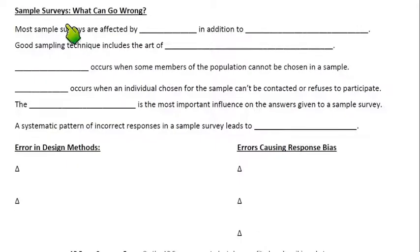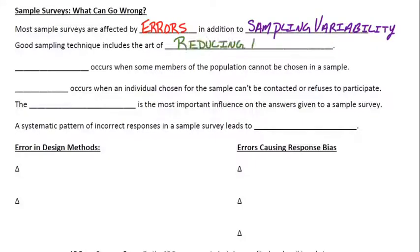Let's finish these notes off. What can go wrong with sample surveys? Most sample surveys are affected by errors in addition to sampling variability, which is unfortunate. We have to deal with errors. Sampling variability is going to occur. That's just why we get dots that are kind of ranging and kind of variable. Good sampling techniques, they include the art of reducing errors, and that is an art. They have to be really good at designing these and implementing these samples.